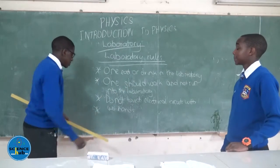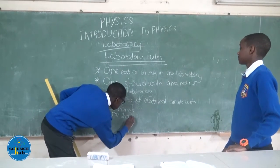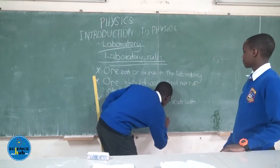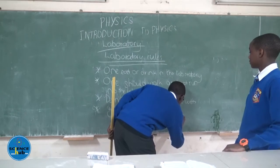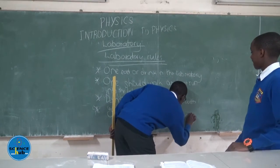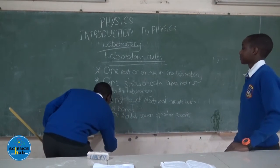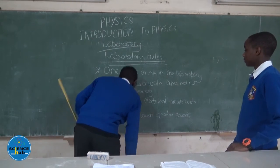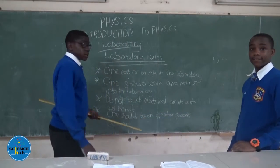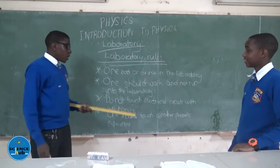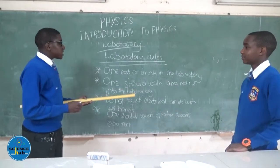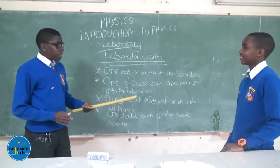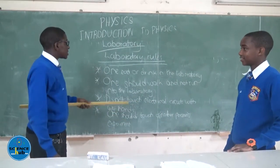One should not interfere with another person's experiment. Someone may be doing an experiment and has left it halfway — perhaps gone to the toilet — and if you interfere with the experiment, it may cause electric shock or scalding.